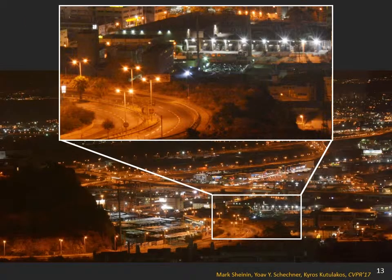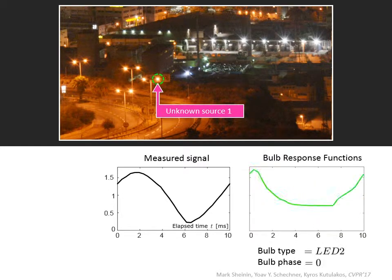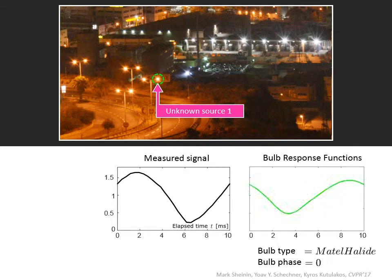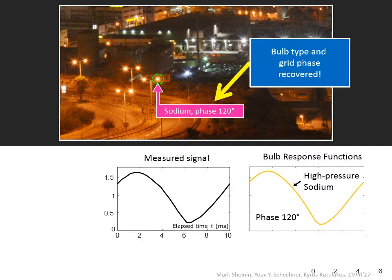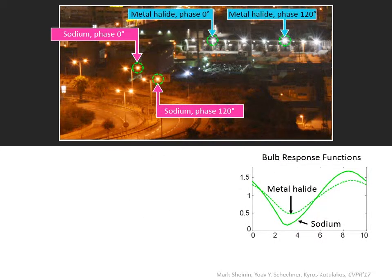Let's see an example. Here is a close-up on a scene containing many bulbs. Let's look at one bulb — below is this bulb's measured flicker signature. We discover the bulb type and AC phase by searching for the closest match in the Delight database. In this case, this is a high-pressure sodium bulb connected to phase 120 degrees. Here is another sodium bulb connected to a different phase. And here are two bulbs whose type is different than sodium — notice that their signature is different from that of sodium bulbs.